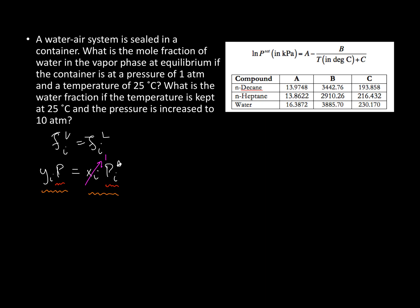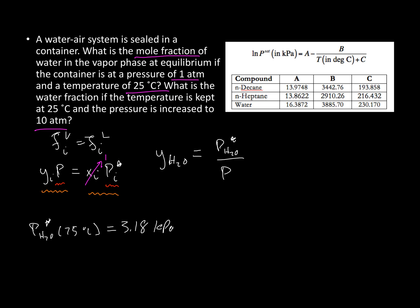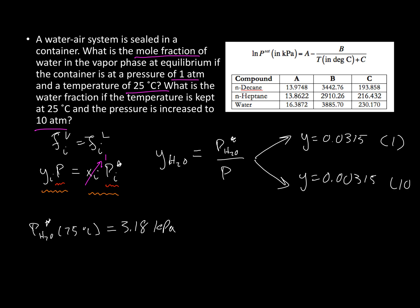The question asks for the mole fraction of water in the vapor phase at equilibrium at 1 atmosphere and 25 degrees C, and also at 10 atmospheres. We're going to solve it generally. In this case, the mole fraction of water in the vapor is simply equal to its vapor pressure divided by the system pressure. The vapor pressure of water at 25 degrees C from the Antoine expression is 3.18 kilopascals. So depending on whether we have 1 atmosphere or 10 atmospheres, we get 0.0315 and 0.00315 respectively.